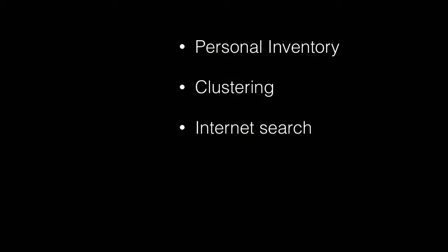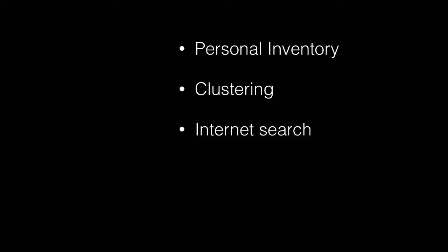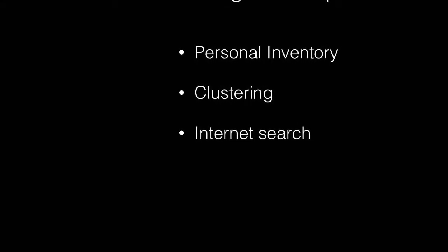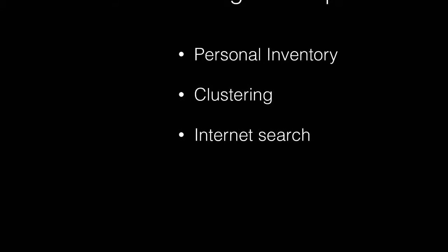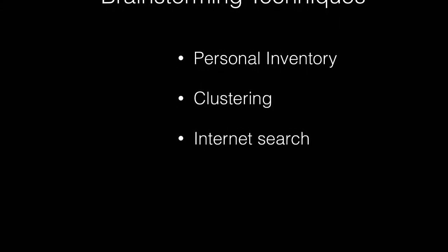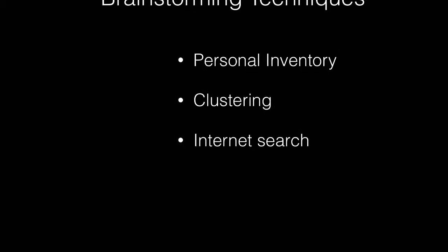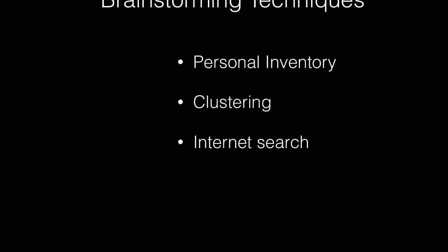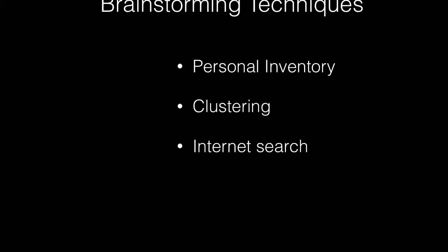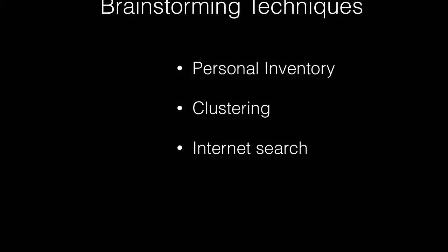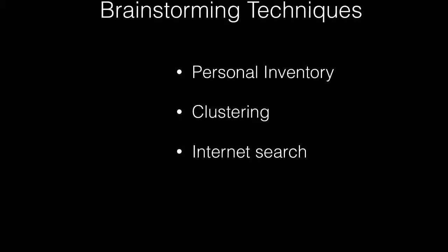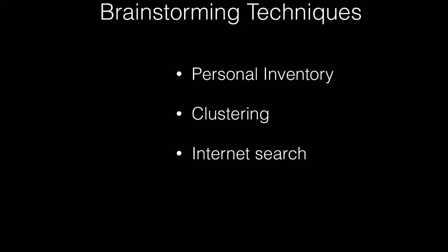The final technique used to find topics is an internet search, and probably every one of you has already done this at some point in your academic career. You look up something on Wikipedia or some other resource page and begin following links. Two or three days later nobody knows where you are — they send out a search party and find you in front of your computer still clicking on links. This can be another fun way to explore topics. Just keep clicking and see where it takes you. Eventually you're going to have to narrow down, but personal inventory, clustering, and internet searches are all ways to help you find a topic you might not have thought of otherwise.